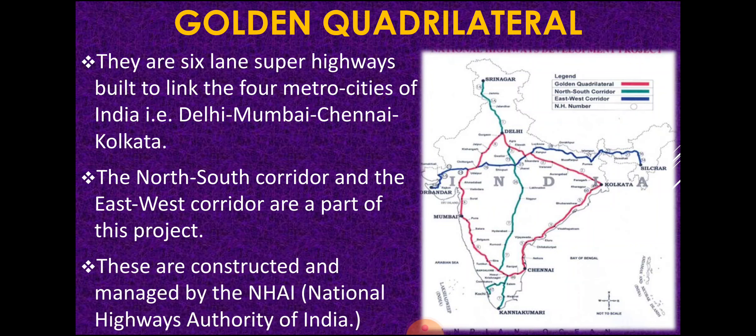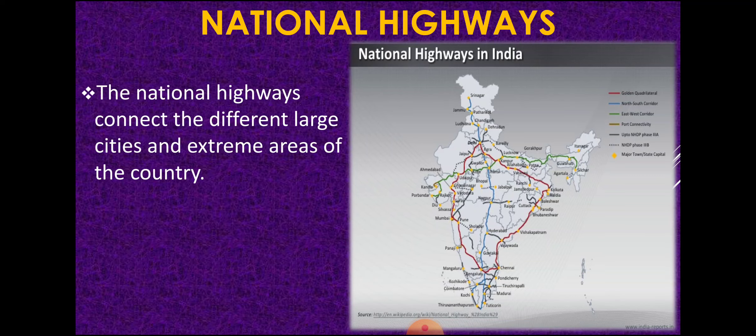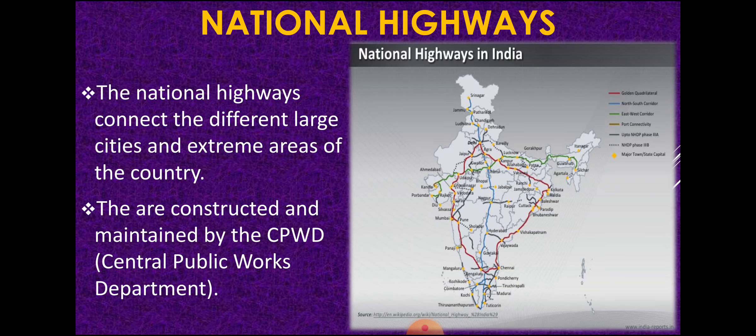The Golden Quadrilateral is constructed and managed by the National Highway Authority of India (NHAI). Next, National Highways — these connect different large cities and extreme areas of the country, linking big cities with other regions. National Highways are constructed and managed by the CPWD, Central Public Works Department. Third, State Highways link the state capital to other district headquarters within a state, and these roads are managed by the SPWD, State Public Works Department.